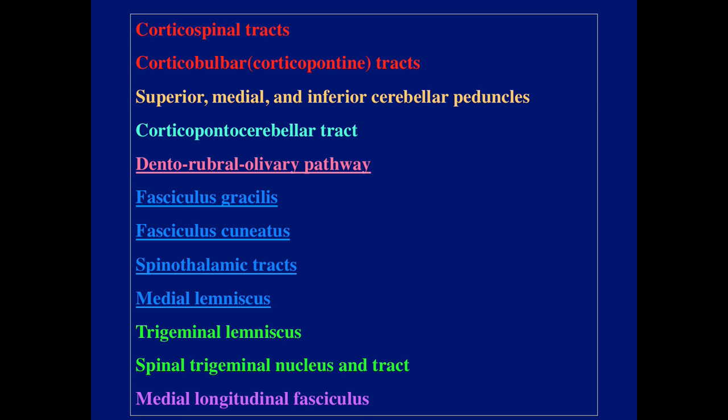In the previous talks I covered the corticospinal tract, the corticobulbar tract, the superior, medial, and inferior cerebellar peduncles, and the corticopontocerebellar tract. I'm going to start today with the dentato-rubro-olivary pathway.